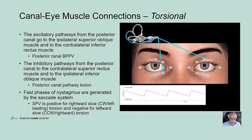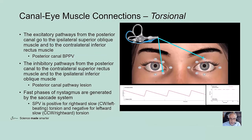The inhibitory pathways from the posterior canal go to the contralateral superior rectus and ipsilateral inferior oblique muscles. Posterior canal lesions cause persistent downbeating and torsional nystagmus beating away from the site of lesion. For right posterior canal lesions, that will be clockwise-beating torsion with positive SPVs.